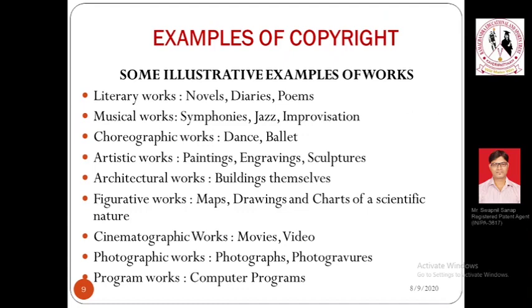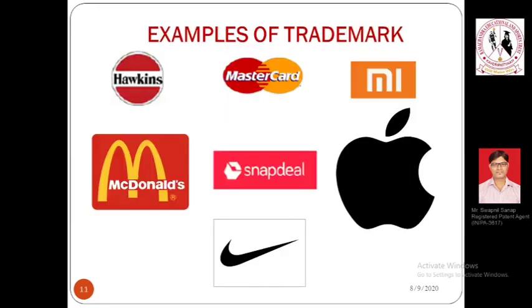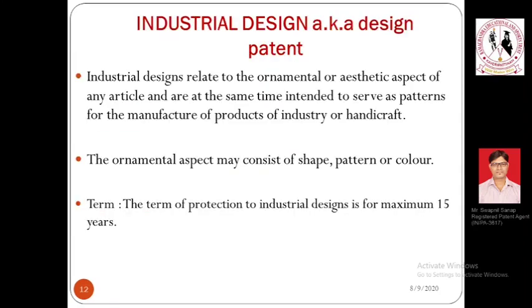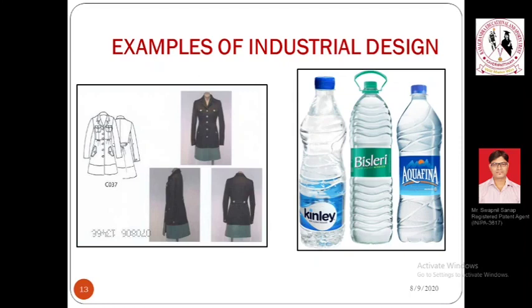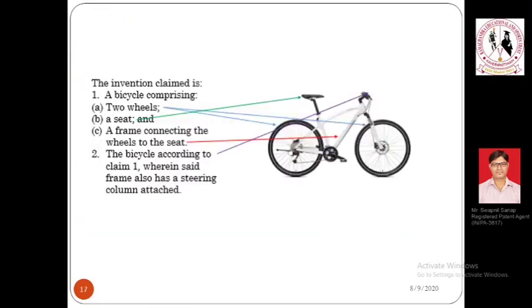Trademark, as the name indicates, is a mark which represents your trade — any particular mark which associates to a product or company is referred to as a trademark. Third is industrial design: a design applicable for a product that helps distinguish it from other existing products without touching it. Best examples here are the Bisleri bottle, the Aquafina bottle, and the Kinley bottle — as well as the layouts of chips packaging in the market.